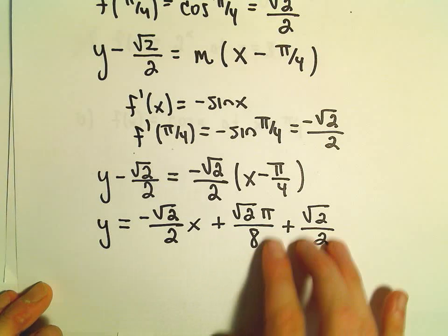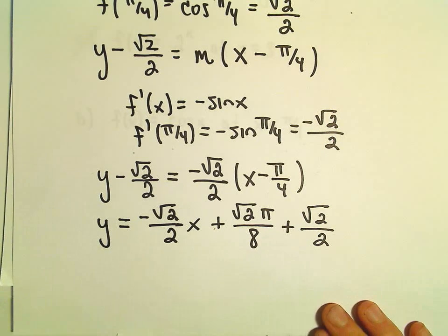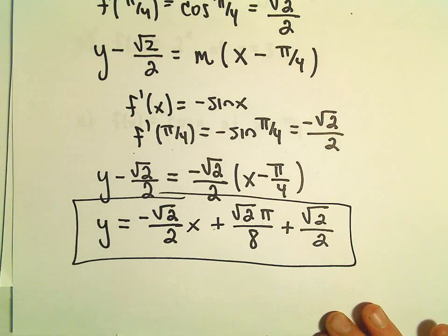You can get common denominators if you want to write your constant as a single term. But this is now our line, our linearization.